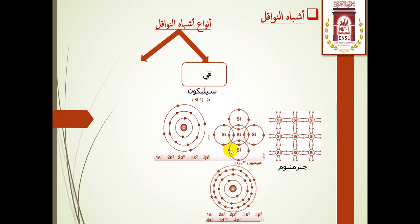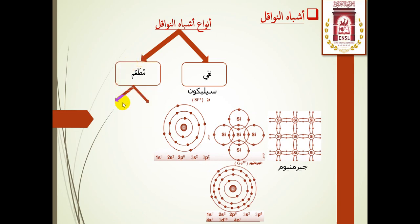بينما بانخفاض درجة الحرارة إلى الصفر المطلق ناقص 273.16 درجة مئوية يصبح عازلا، أي أنه لا يمكنه أن يوصل التيار الكهربائي. هذا بالنسبة إلى النقي.